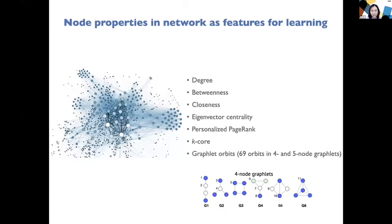We also considered 69 orbits of graphlets. A graphlet is basically a network motif — a unique network pattern. Here we have examples of all four-node graphlets. When we look at those graphlets, we can see there are unique positions on each graph called orbits. We considered all possible four-node and five-node graphlets, yielding 69 unique orbits. We treat those as 69 new features and count how many times one node is located on each unique orbit — their frequency.